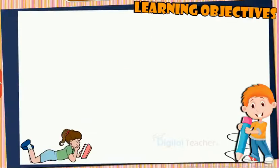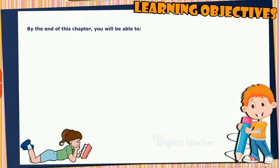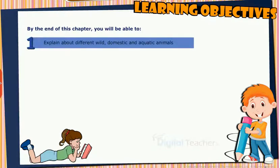Learning Objectives: By the end of this chapter, you will be able to explain about different wild, domestic and aquatic animals.